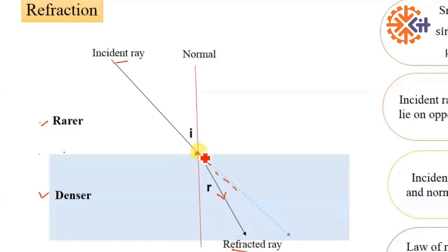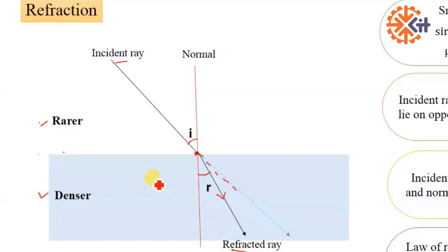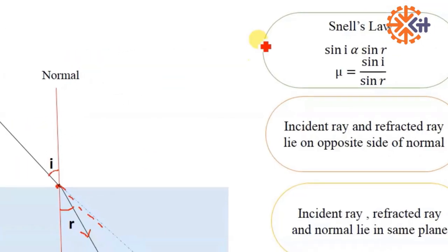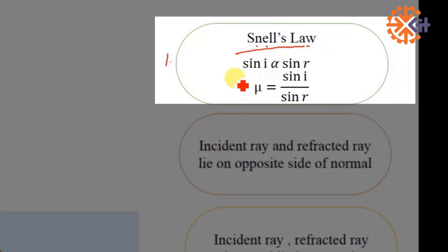Refraction is a phenomenon in which a light ray changes its path as the medium is changed. It follows certain laws. The first is Snell's law, which states the relation between angle of incidence and angle of refraction. For a particular pair of rarer and denser media, the sine of the angle of incidence is directly proportional to the sine of the angle of refraction. The constant of proportionality is represented by mu or n, which is known as the refractive index of the second medium with respect to the first, given by the ratio of sine of angle of incidence to sine of angle of refraction.